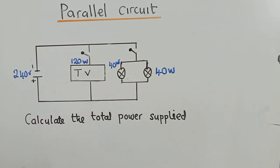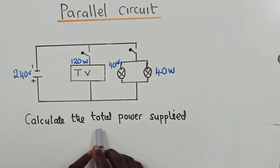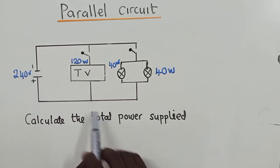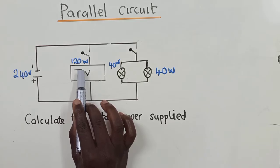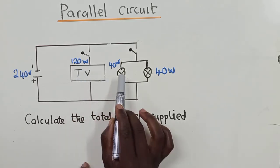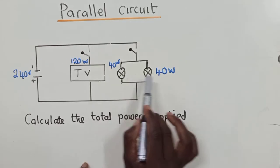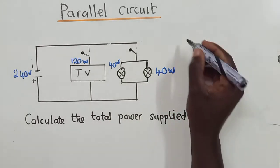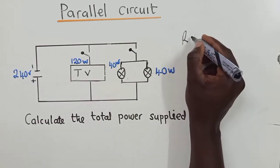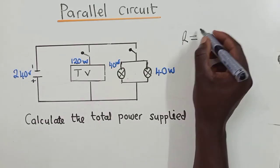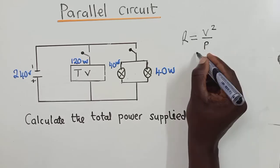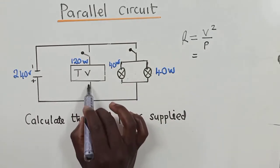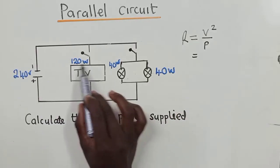Hi, welcome to my platform, this is CChamber Jacob. We need to calculate the total power supplied. We have a circuit right here, so the first thing will be to calculate the resistance for the TV and the other elements. To calculate resistance we're going to use the formula: voltage squared over power.